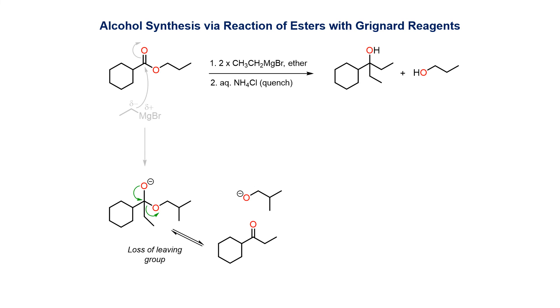The tetrahedral intermediate then collapses, with reformation of the carbonyl and loss of the alkoxide leaving group. The resultant ketone will then be susceptible to attack in a subsequent step.